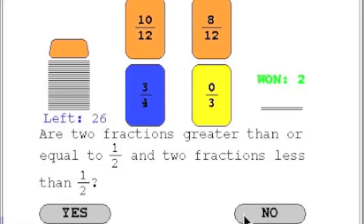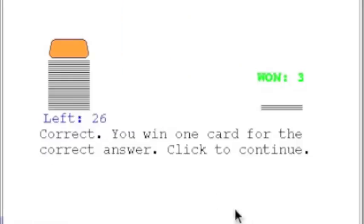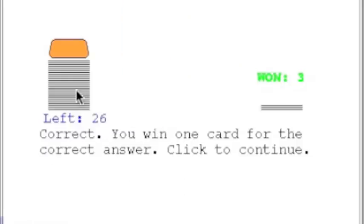If the player knows the four cards don't satisfy the condition and clicks No, the player wins one card. If the player wins 20 or more of the 32 cards, the player wins the game.